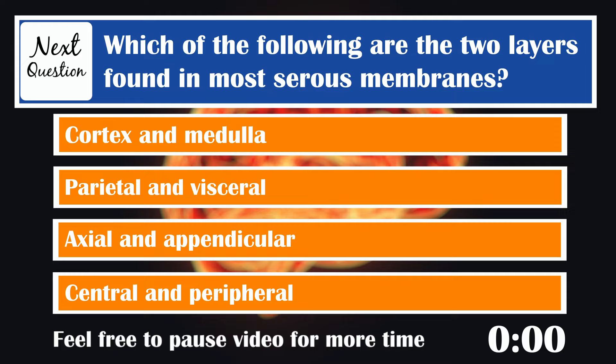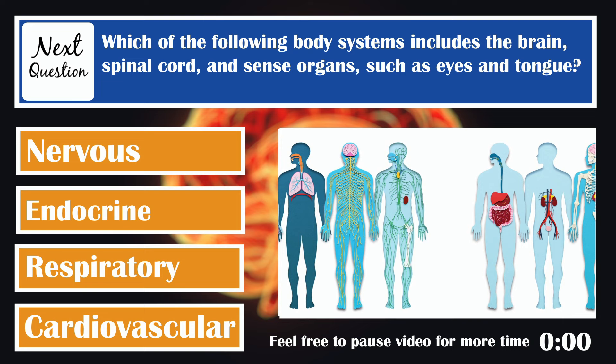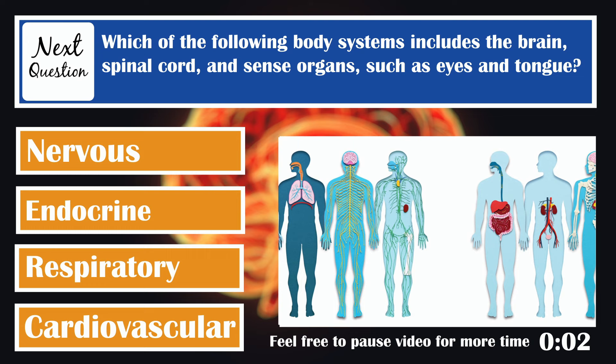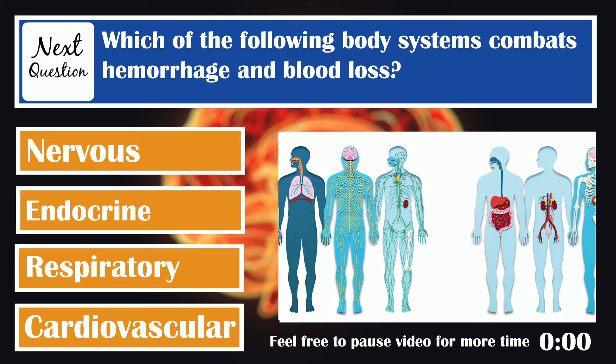Which of the following are the two layers found in most serous membranes? Parietal and visceral. The parietal layer covers the walls of the body cavities like wallpaper and often adheres to it. The visceral layer covers the visceral organs located within the body cavity. Which of the following body systems includes the brain, the spinal cord, and sense organs such as the eyes and tongue? Nervous system. Which of the following body systems combats hemorrhage and blood loss? Cardiovascular.